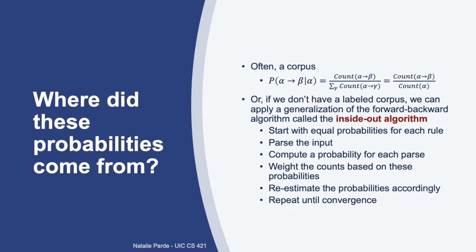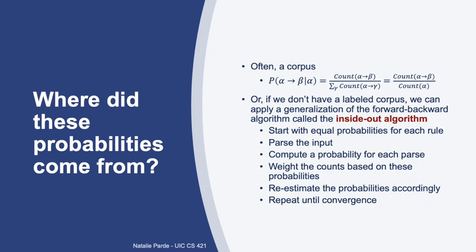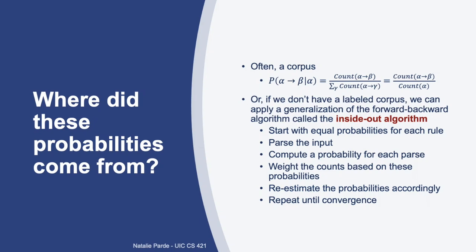If we don't have a labeled corpus available, we can also apply an algorithm called the inside-outside algorithm. The inside-outside algorithm is a generalization of the forward-backward algorithm that we saw with HMMs, and allows us to iteratively improve probabilities over time. Overall, probabilistic CKY is a simple extension upon the classic CKY algorithm we already discussed, and it forms the basis of most modern statistical parsers.